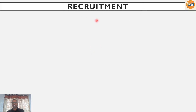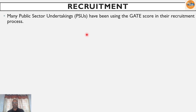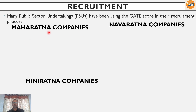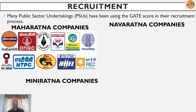Recruitment is also one of the important aspects because most PSUs recruit candidates mainly through GATE qualification. They call GATE-qualified people and conduct interviews based on performance, then recruit them. In PSUs, we have three categories: Maharatna, Navratna, and Miniratna. Maharatna companies include Indian Oil, ONGC, Coal India, Bharat Petroleum, BHEL, GAIL, NTPC and others.